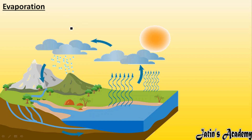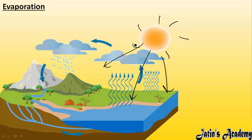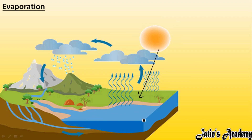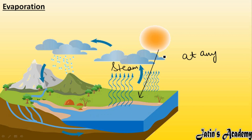Next we are having the process of evaporation. In boiling, a fixed temperature is needed to convert liquid to gaseous state. But in evaporation, for example, water is there in the open and the sun gives heat to everything in the atmosphere. This water absorbs heat from the sun, changes into steam and moves upward. This process, in which liquid converts into gaseous state at any temperature, is known as evaporation.